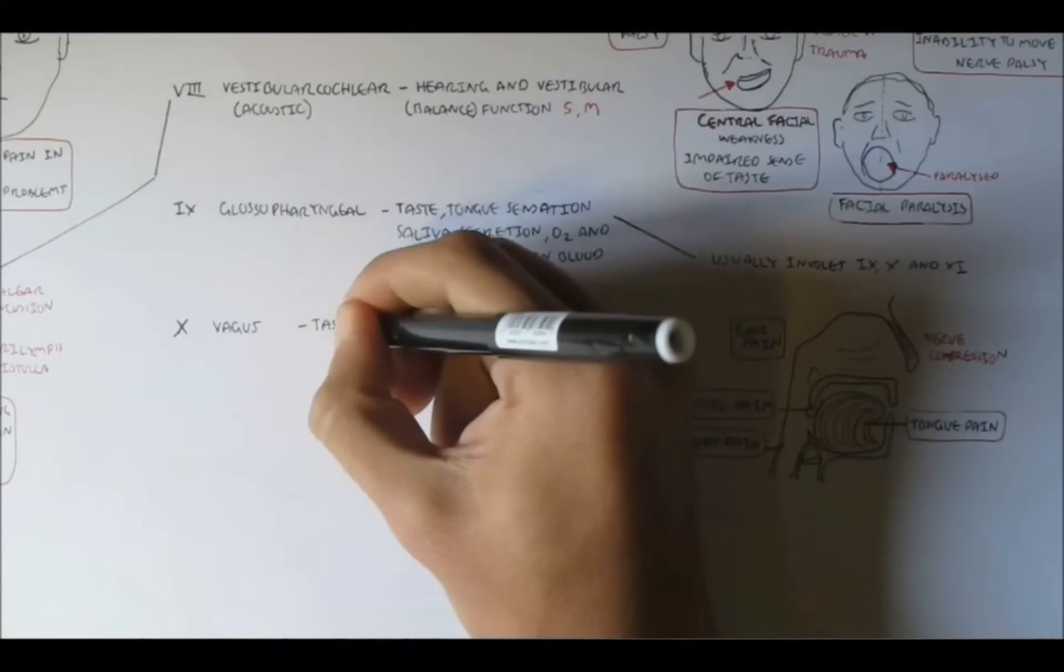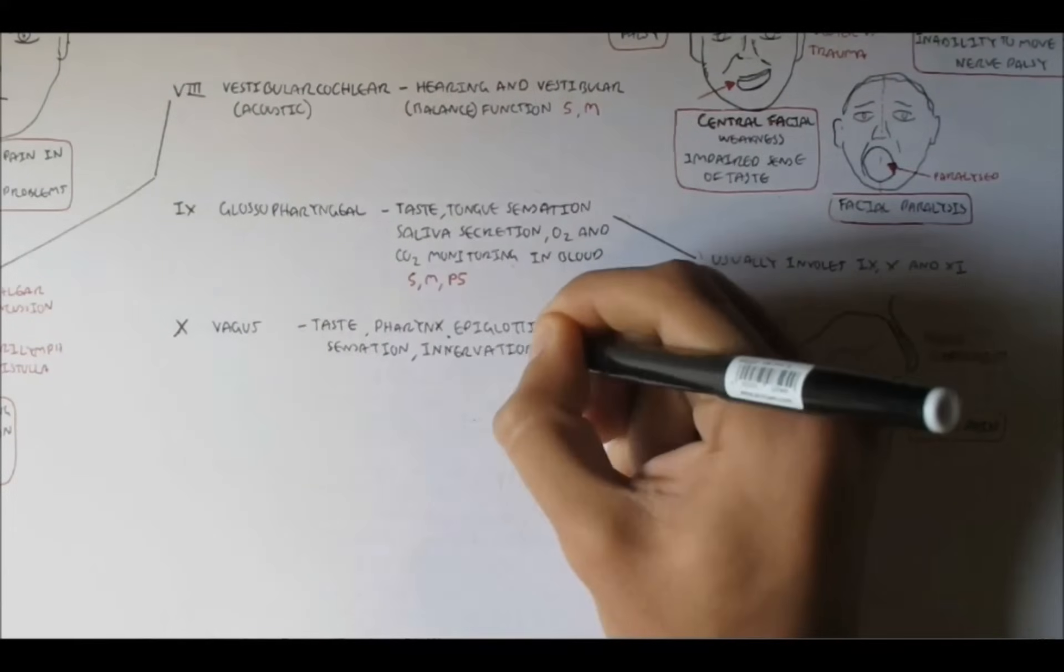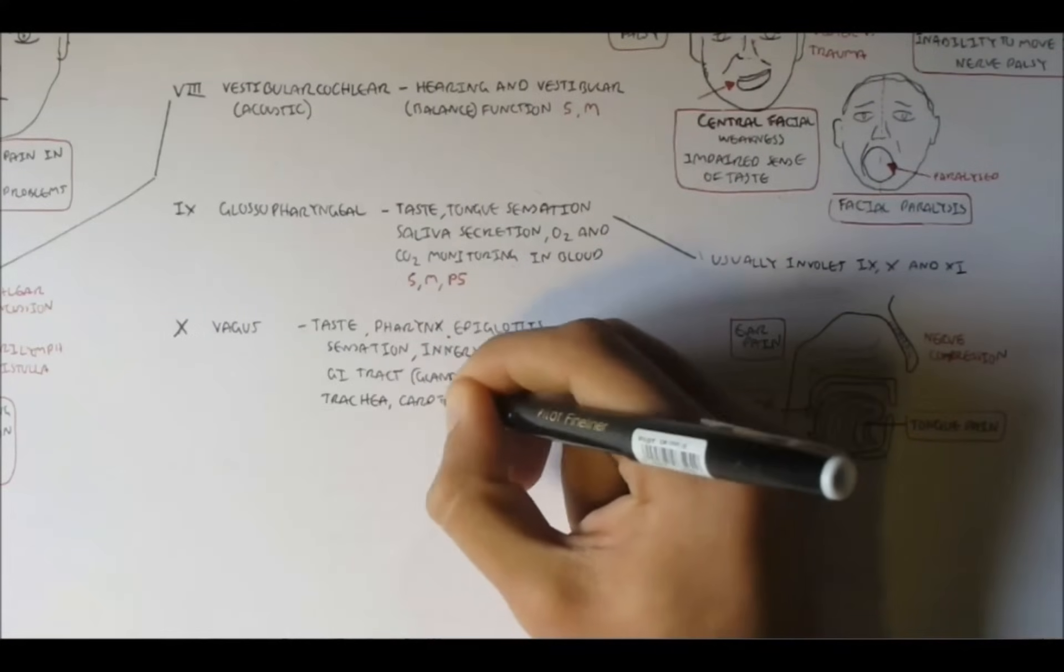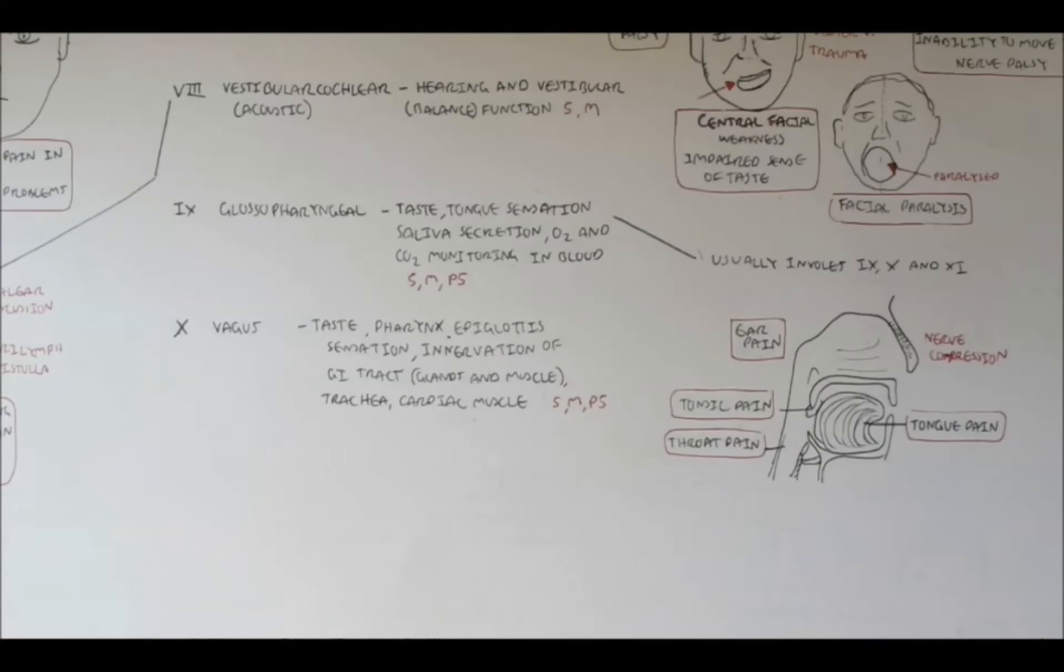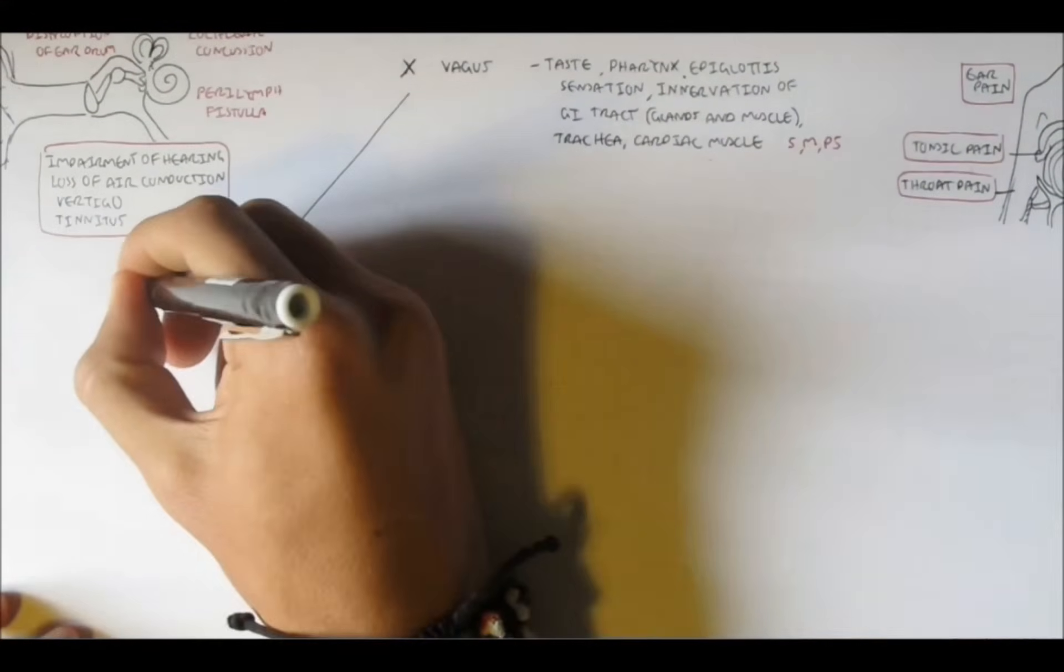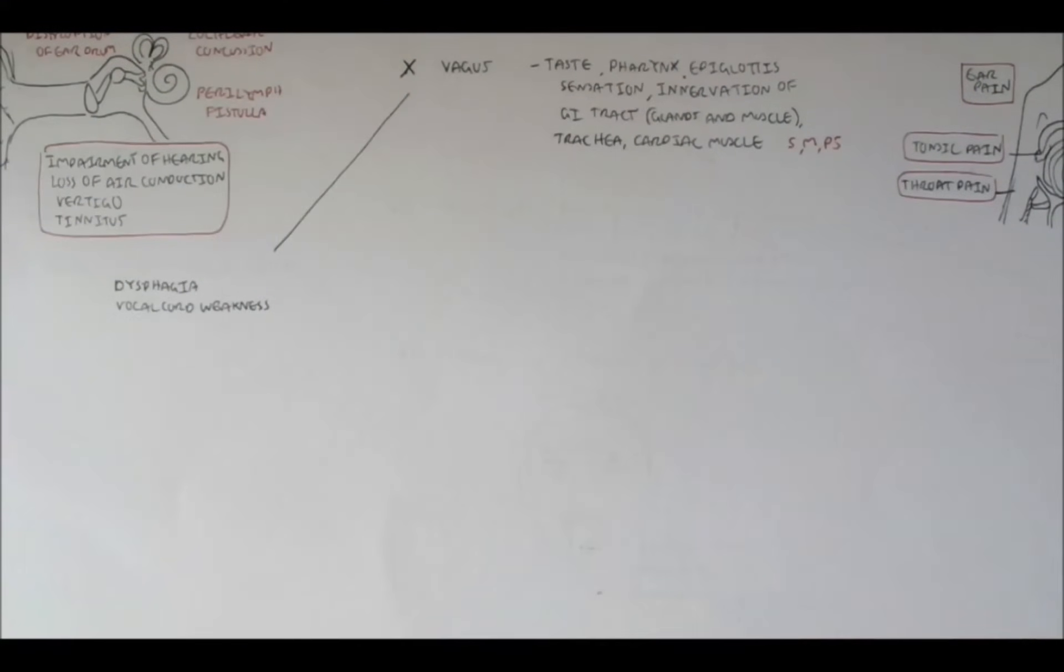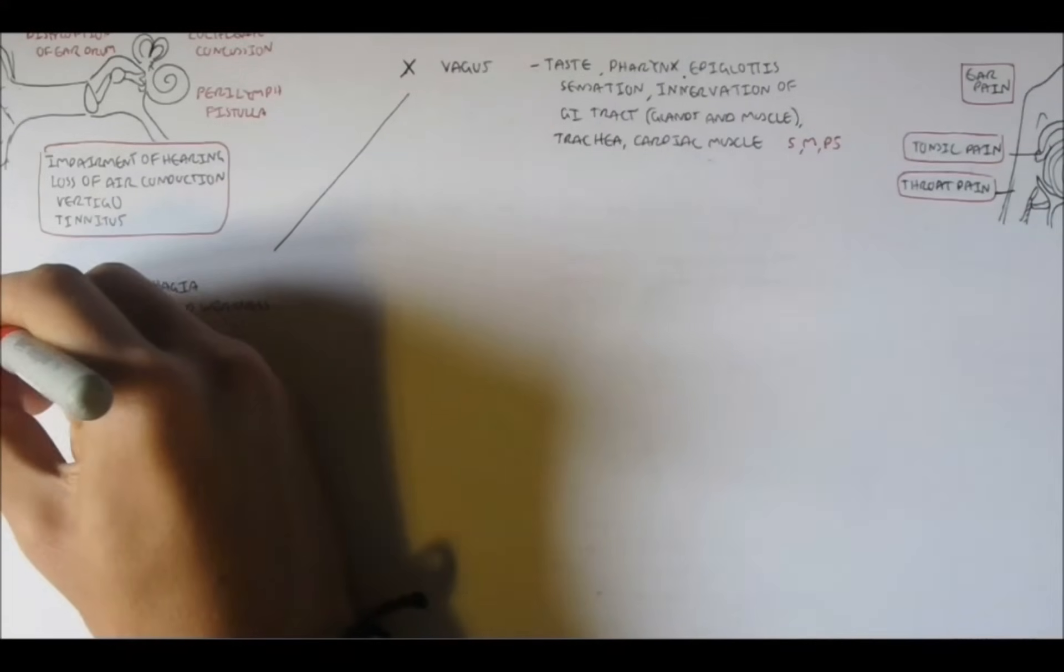Nerve 10, possibly an important nerve to remember, is the vagus nerve, which controls taste, pharynx activity, epiglottis sensation, also has a role in the innervation of the gastrointestinal tract, the glands and the muscles, and also controls the trachea and has a role in control of cardiac muscles as well. So it's pretty important. Damage to this area is broad and encompasses several types of problems. I will probably not say much here, but you can look in the books, literatures for more information. But it can cause dysphagia, which is difficulty swallowing or paralysis in swallowing, vocal cord weakness, so difficulty in speaking.